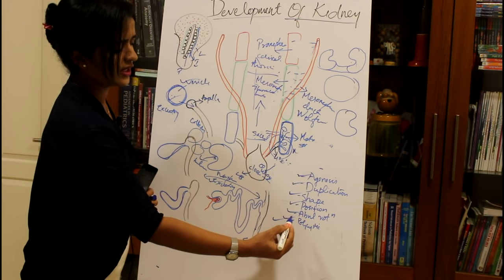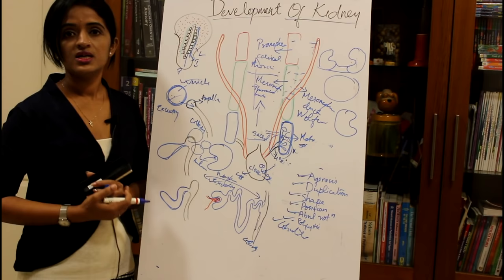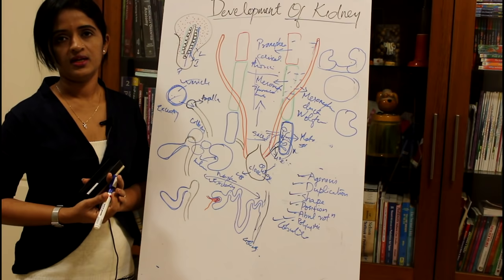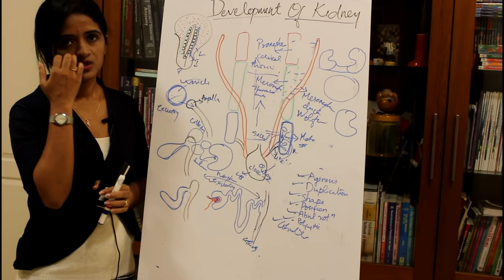Another anomaly is lobulated kidney. The fetal kidney is always lobulated at early stages, but if this lobulation persists in the adult it is called lobulated kidney.